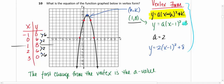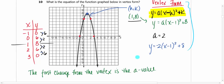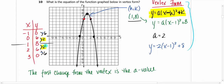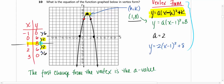The only thing left to find is A, which is a bit tricky. I made a chart of the points from the graph. You can find the A value by the first change from the vertex. My vertex is (1, 8), and my first change from the vertex is negative 2 — the same on both sides because of symmetry. Take that negative 2 and plug it into the working formula to get the equation in vertex form.